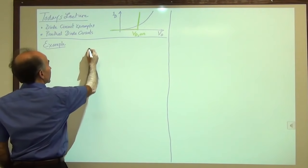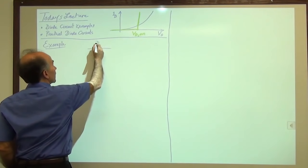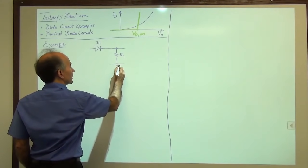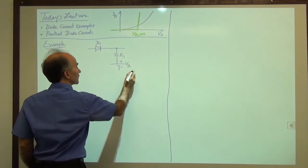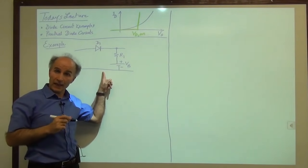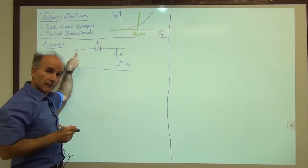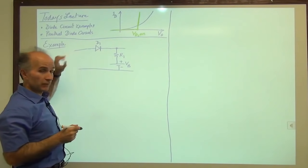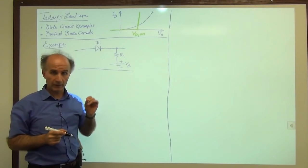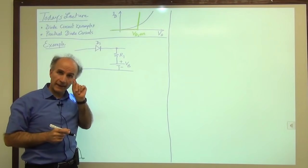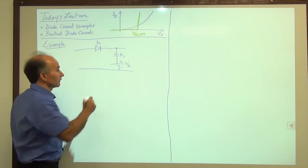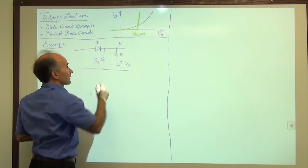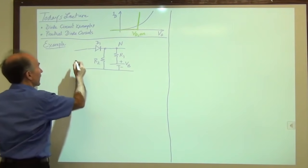We had a circuit with a diode D1, a resistor R1, and a battery VB. Today we'll twist this a little bit by adding one more resistor R2 from node N to ground. So we have R2 connected from node N to the bottom rail, and we will perform the same type of analysis. In the first step, we apply a voltage Vx here and measure the resulting current Ix as Vx goes from minus infinity to plus infinity.